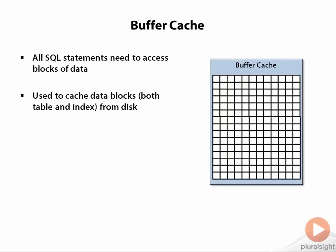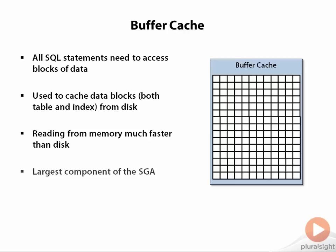Being able to cache data blocks is extremely important to the performance of any database, and Oracle is no exception. Even though there have been tremendous gains in the performance of disk systems over the years, it is still generally many orders of magnitude faster to read a block from memory than from disk. As such, the buffer cache will be far and away the largest component of the SGA.